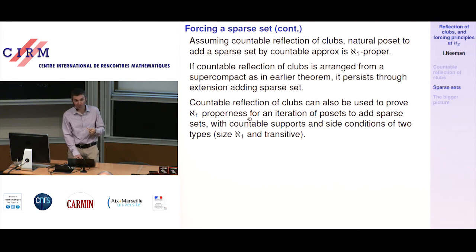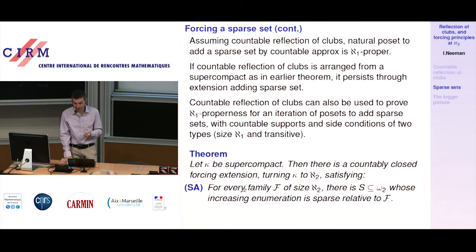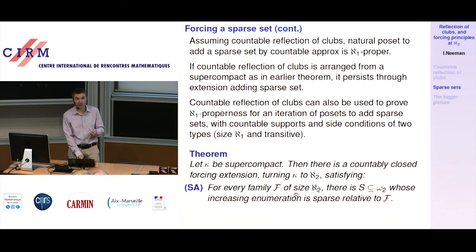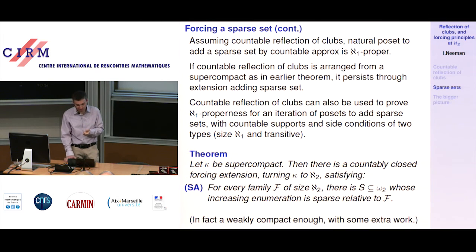So you end up with: suppose kappa is supercompact, then there is a countably closed forcing extension turning kappa into aleph_2 and satisfying the sparseness axiom — for every family F of size aleph_2 of clubs in omega_1, there is some S which is sparse relative to everything in that family. You can keep adding sparse sets to get this universality: sparse sets for every F of size aleph_2. In fact, a weakly compact is enough with a little more work.